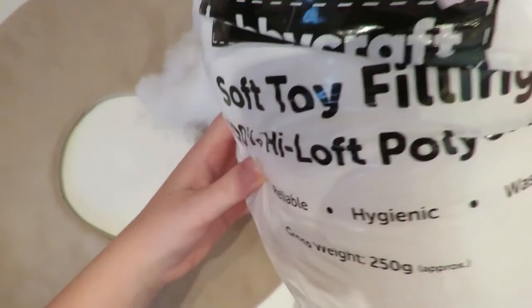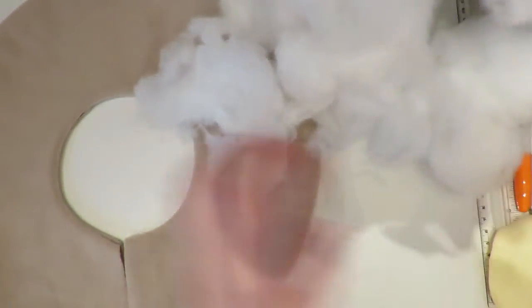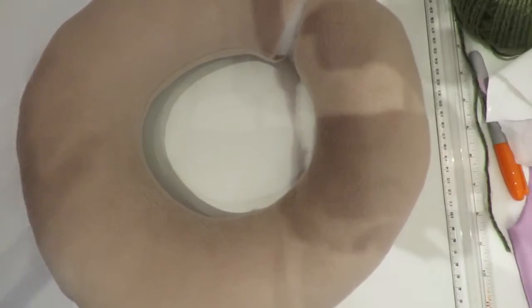Now you're going to go ahead and take your polyester fiber fill—mine is from my local craft store. You're just going to stuff, stuff, stuff, and you can stuff it very firm. I like to stuff my plushies firm, but some people like them softer, so just stuff it to your liking and then we'll go on to the next step.